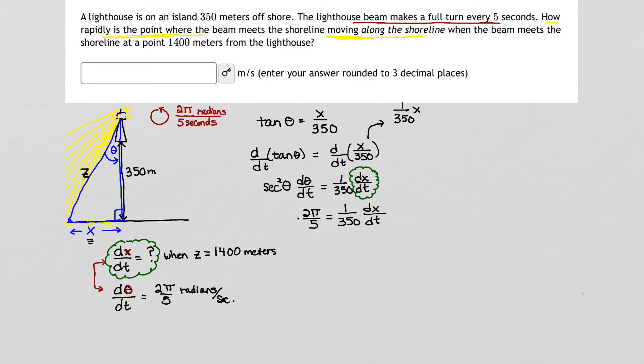So there's only one piece that remains missing, and that is the secant squared of θ. Now we don't know anything about θ, but there is a little bit of information we haven't used yet, and that's that 1400 meters. So let me put a little picture over here. So I have this triangle, and this leg right here is always 350 meters, and we're given at a specific moment that the hypotenuse of this right triangle is 1400 meters.